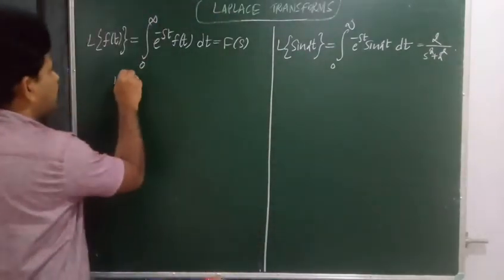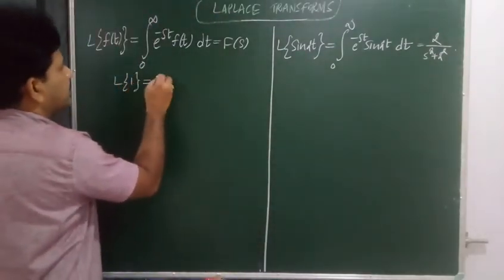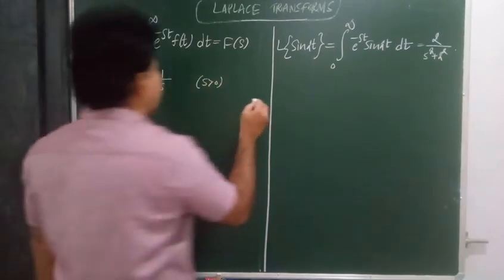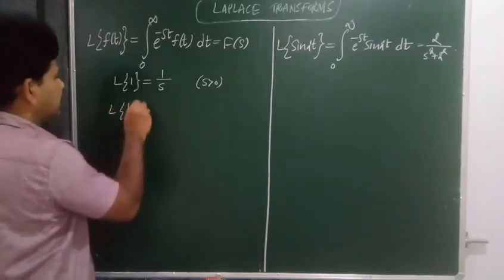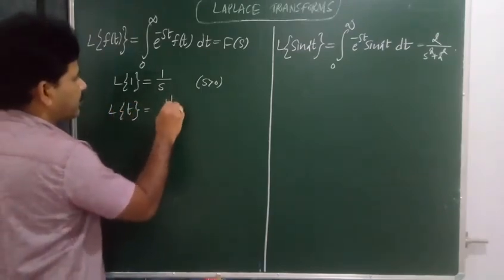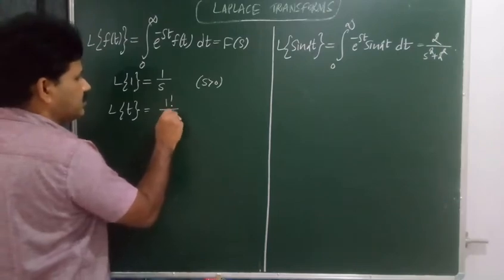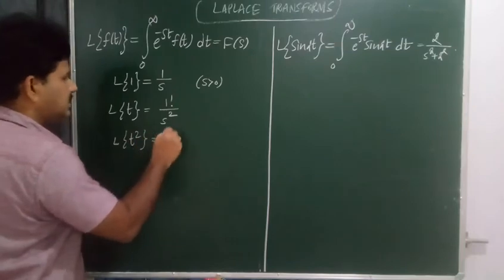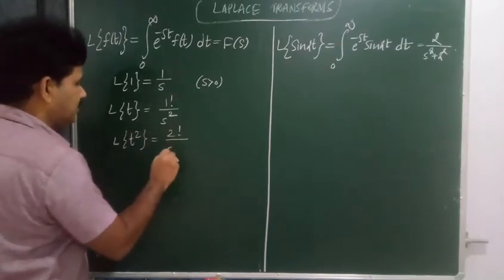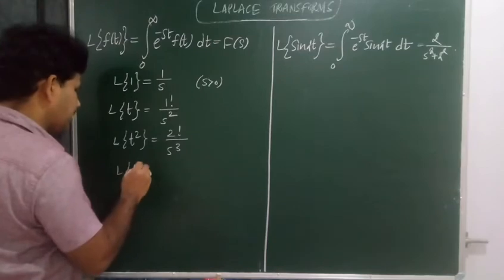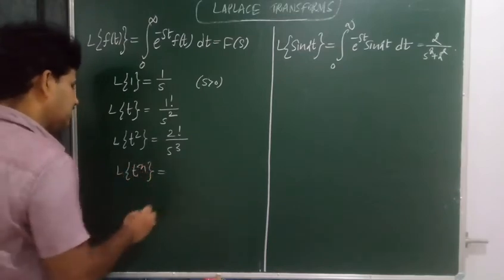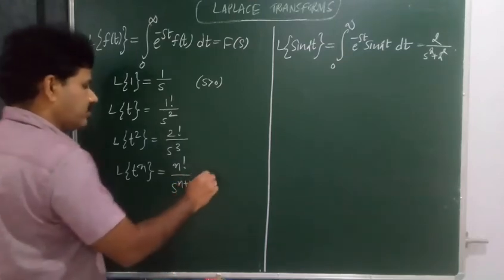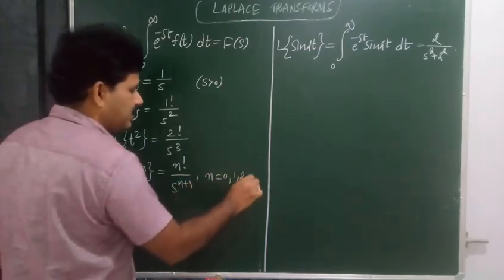Laplace transform of 1 is 1 upon s, provided that s is positive. Laplace transform of t equals 1 factorial upon s to the power 1 plus 1, that is s squared. Laplace transform of t squared is 2 factorial upon s cubed. Laplace transform of t to the power n equals n factorial upon s to the power n plus 1, for n equal to 0, 1, 2 and so on.